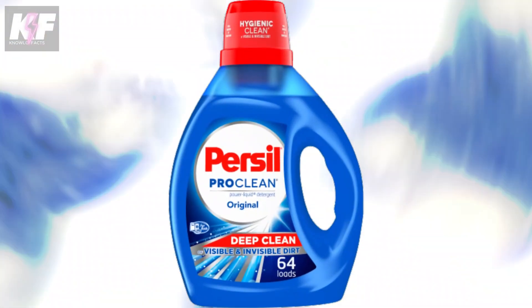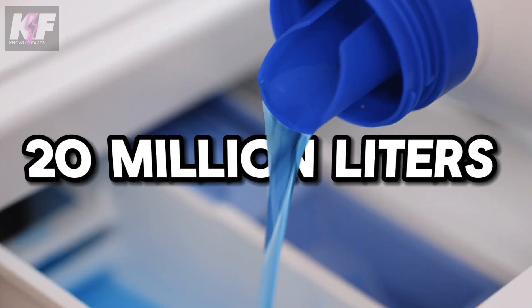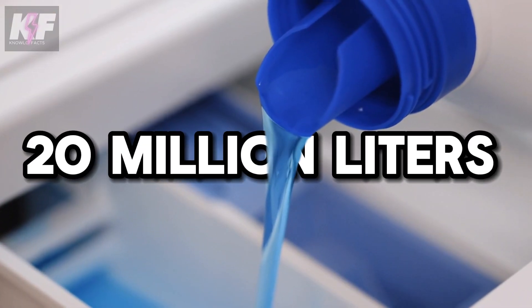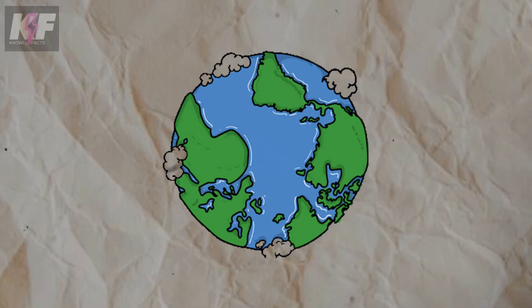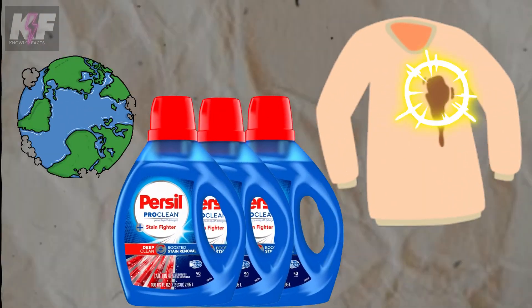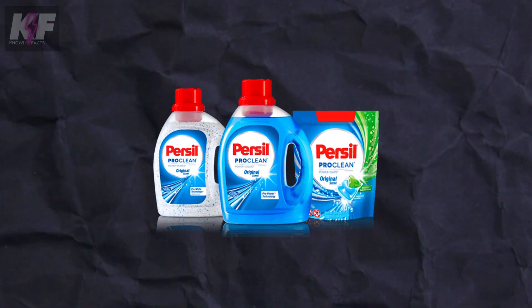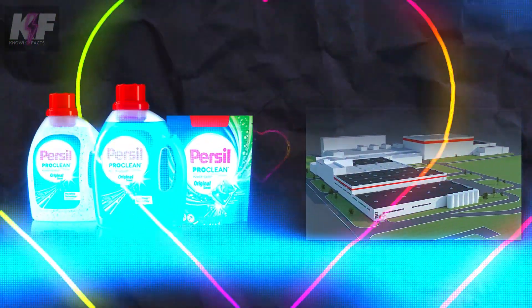Do you know what it takes to make the detergent that powers millions of washing machines daily? More than 20 million liters of this vital cleaning agent are used globally every day. Crafting a liquid potent enough to remove tough stains from clothes is no small feat. To uncover the secrets behind this everyday essential, we ventured into the heart of Henkel's factory.